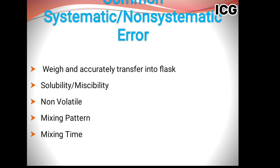Now we will discuss some common systematic and non-systematic errors. Number one: weigh accurately and transfer into the flask — this is the first and most important step. Most of the time the analyst either does not weigh correctly, or even if the weighing is correct, the transfer is not done properly. This is where the error starts. Even if you work accurately afterward, since you have already introduced an error at the first step, that error will move in parallel throughout your results.